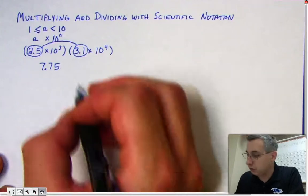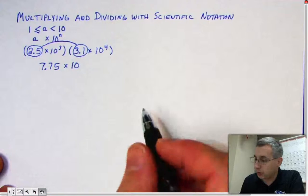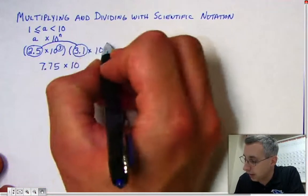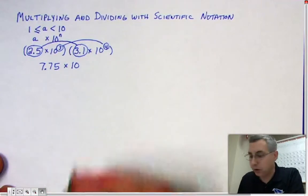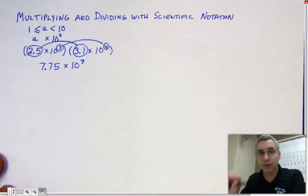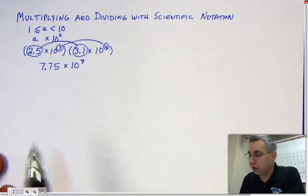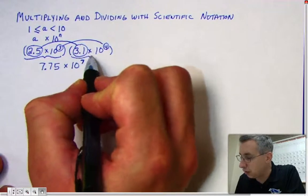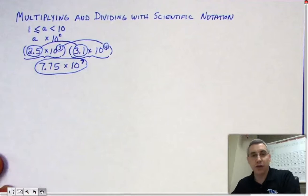Now you write times 10. And because we're multiplying two numbers in scientific notation, you need to add the exponents. So add 3 plus 4, that gives you 7. So you have your answer right here. When you multiply 2.5 times 10 to the third by 3.1 times 10 to the fourth, your answer is 7.75 times 10 to the seventh.